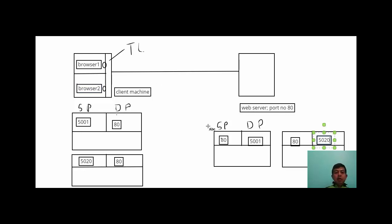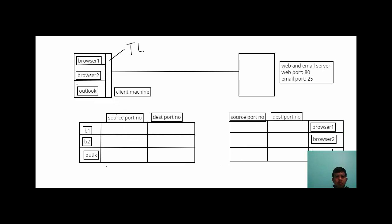Let's take another example. We have a machine running both a web server and an email server. The web application is on port 80 and the email server is on port 25. A client machine has browser one and browser two sending requests to the web server, and an Outlook application sending a request to the email application on port 25.